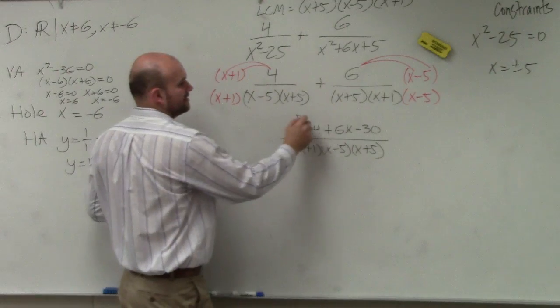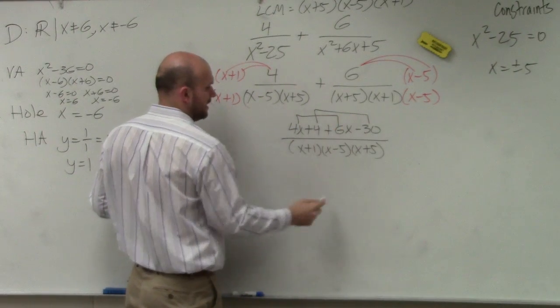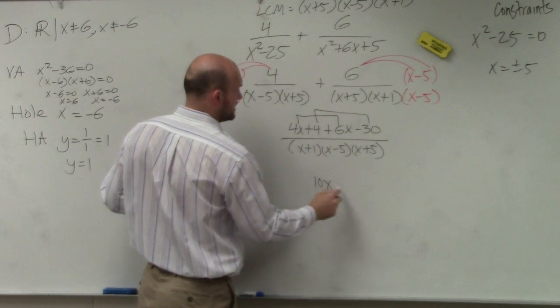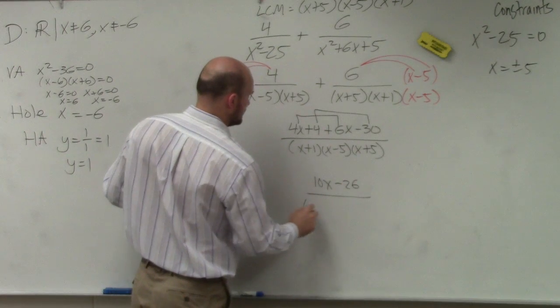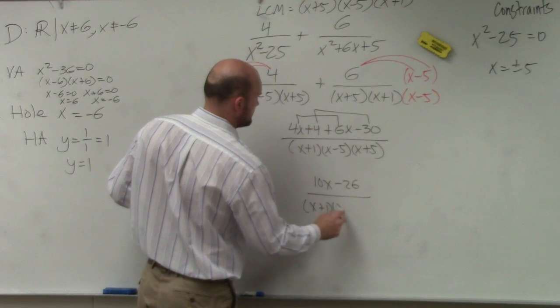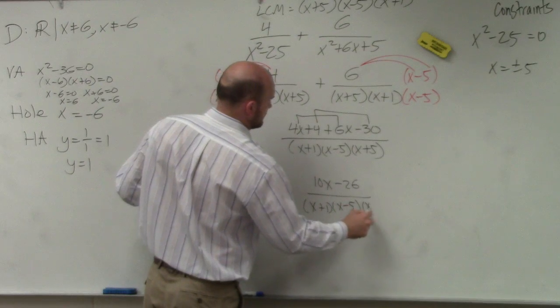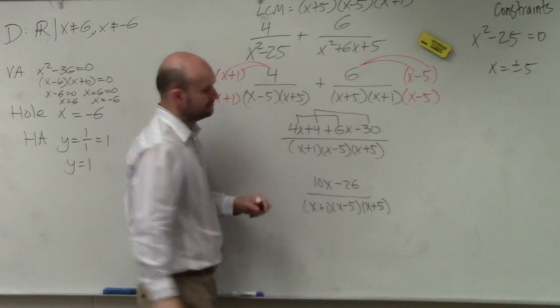Then I can combine like terms. And I have a final answer of 10x minus 26 all over, in factored form, that's.